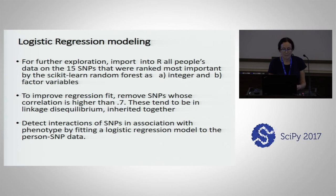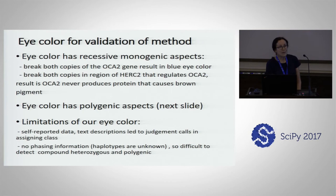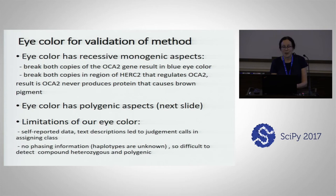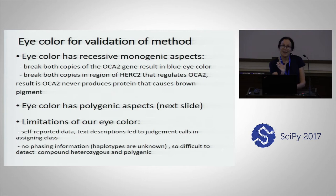We used eye color for validation of the method. Eye color is an ideal set to validate because it has recessive monogenic aspects as well as polygenic aspects. Blue eyes is a recessive trait. There are actually two genes that operate in this way: OCA2 and HERC2. OCA2 creates the proteins needed to produce pigment in the eye, and HERC2 has a region in it that regulates OCA2. So if you have a recessive double mutation in HERC2, the OCA2 genes will never get created even if they're fine.